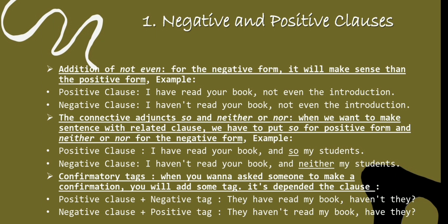The third point is about the confirmation tag. When you want to ask someone for confirmation, you add a tag. The form depends on the clause: if the clause is positive, you add a negative tag; if the clause is negative, you add a positive tag. For example, in the positive clause 'They have read my book,' the negative tag is 'haven't they?' And in the negative clause 'They haven't read my book,' the positive tag is 'have they?'